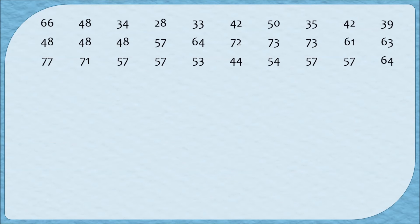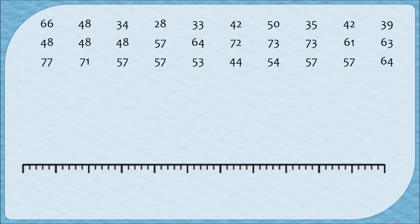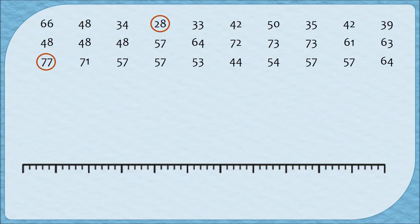The prep work for making a dot plot is super easy. All you need is a horizontal axis. To label it, I scan through my data and find the smallest value, which in this case is 28 degrees, and the highest value, which is 77. So when I label my horizontal axis I need to make sure I start at 28 or before and end at 77 or above. I think starting at 25 and ending at 80 will do the trick. I'm going to count by fives, but you can count by twos, tens, or whatever is easier for you.